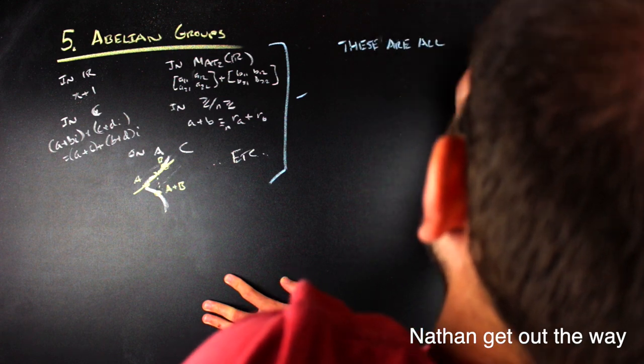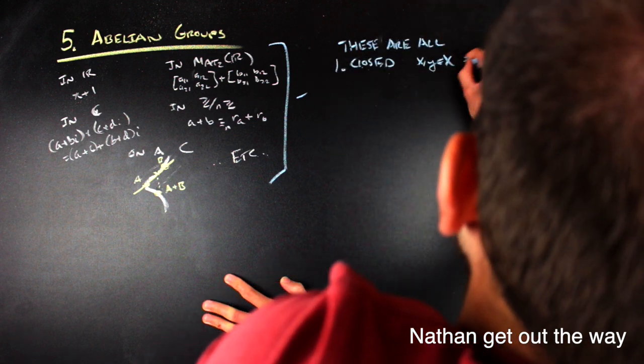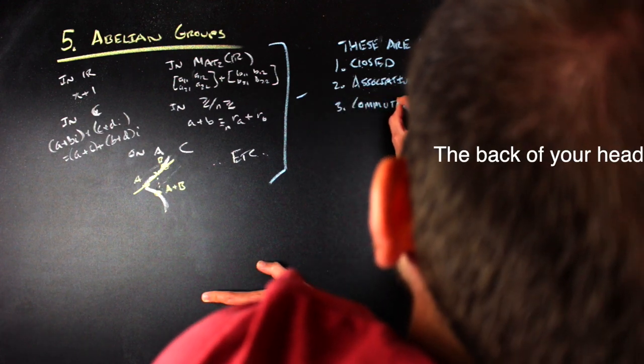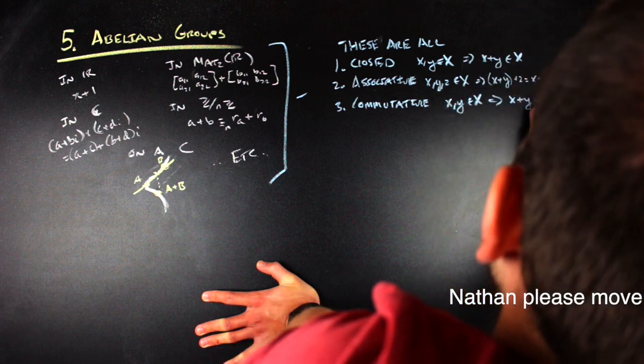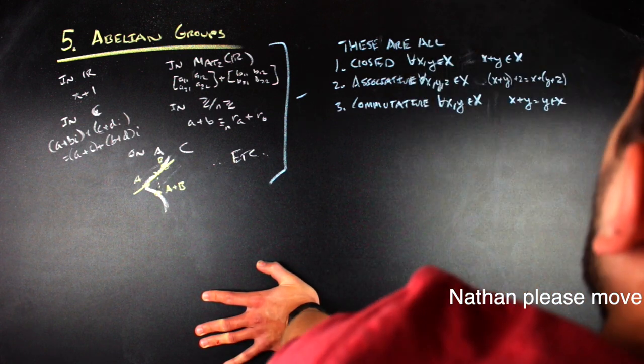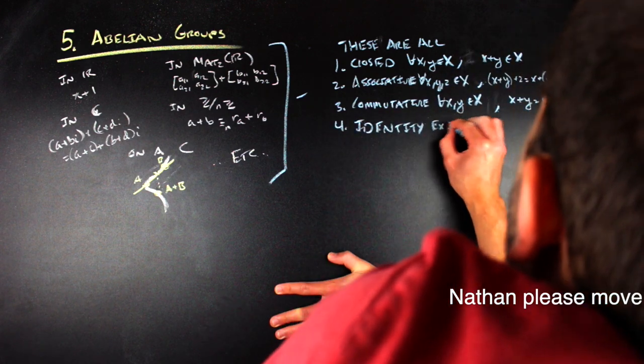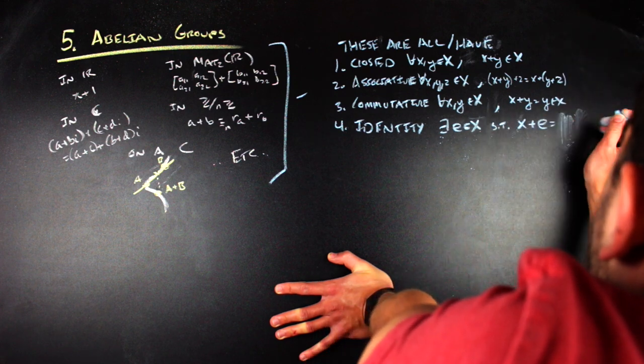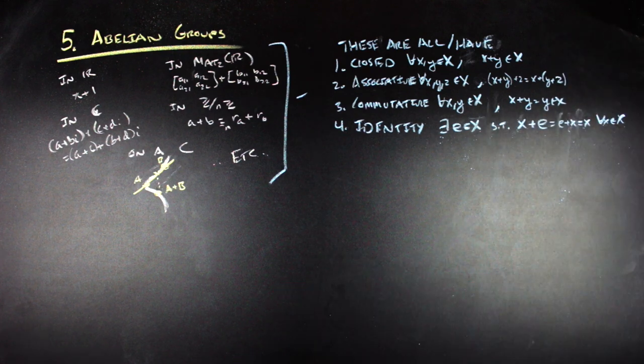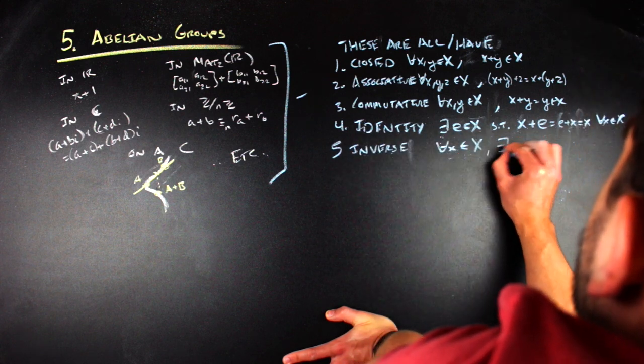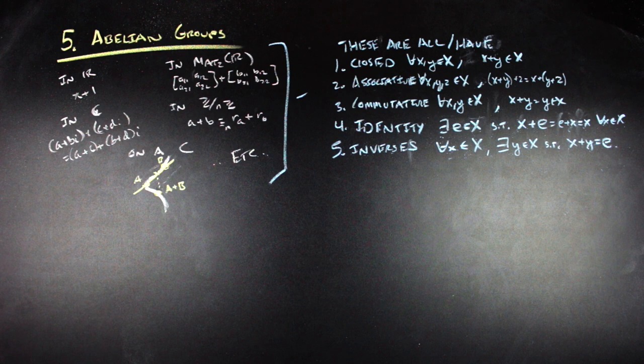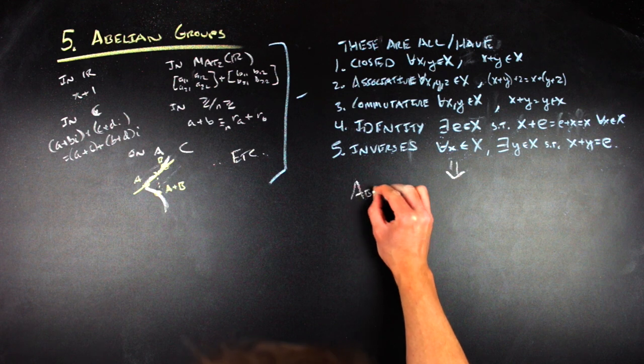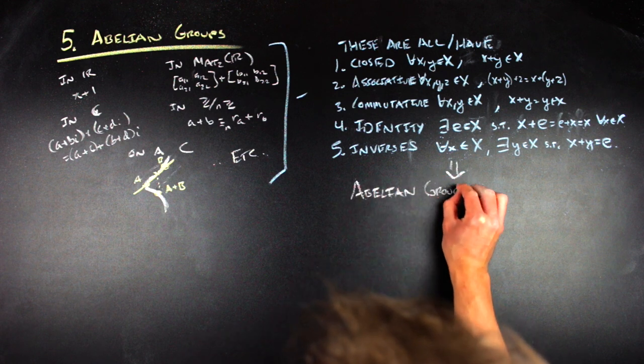These operations are going to be closed, so addition doesn't move you outside of the set you're working with. Associative, so you can group things together in a particular way. Commutative, which is something special to abelian groups you'll learn. So you can switch the order in which you add things. There is going to be an identity element, so something that acts like zero with normal addition. And then there's also going to be inverses, or something that takes you back to your identity for every element in your set. So again, when you have a set and an operation that have these properties, then you end up in a context of what we call an abelian group.